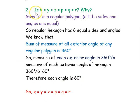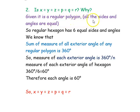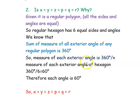The next part of the question asks: is x = y = z = p = q = r? That is, are all the exterior angles equal? Since it is a regular polygon, all the sides and angles are equal — it has six equal sides and six equal angles. We have established that the sum of all exterior angles of any regular polygon is 360 degrees, so for a hexagon it is also 360 degrees. Another formula gives the measure of each exterior angle as 360° ÷ n, where n is the number of sides.